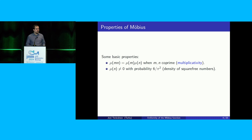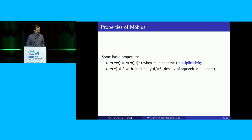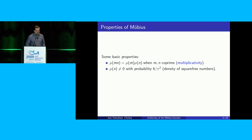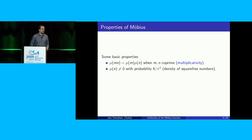Another property is that it's not too difficult to compute the density of integers n for which mu of n is non-zero. This turns out to be 6 over pi squared — the density of squarefree numbers. This is a simple computation which boils down to Basel's problem, so the sum of 1 over n squared, which equals pi squared over 6.